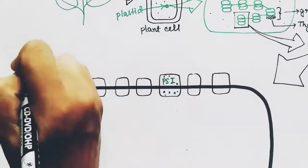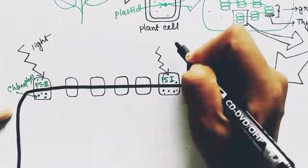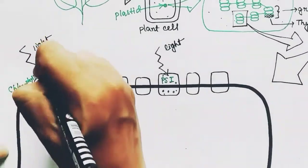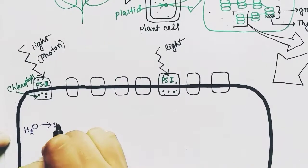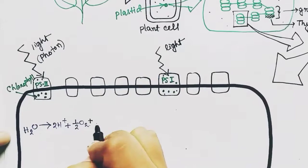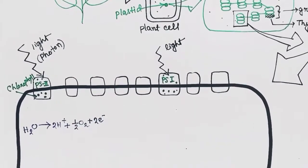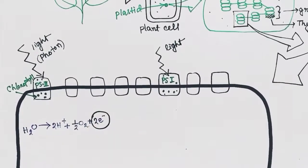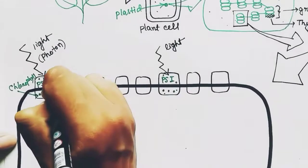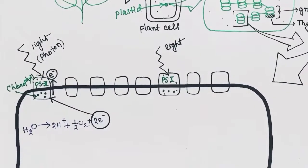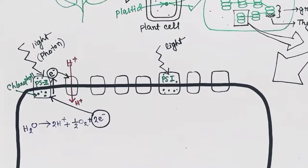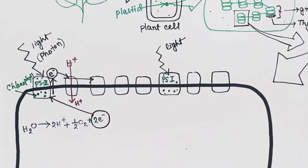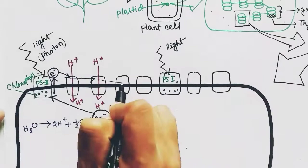Light strikes on the photosystems PS2 and PS1. One water molecule will break down to form 2H⁺, half of O₂, and two electrons. The electrons will be given to PS2, and it will get the energy of the photon and will be excited. Now the excited electron will be transferred via the carrier proteins. During this process, using the energy of the photon, hydrogen ions will be pumped inside the lumen of the thylakoid.